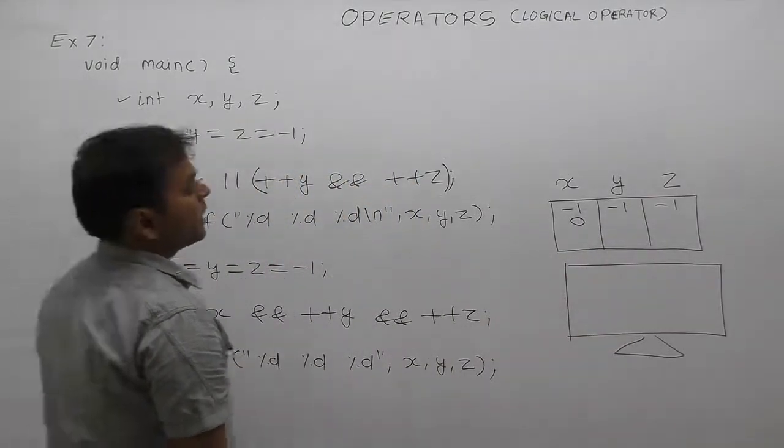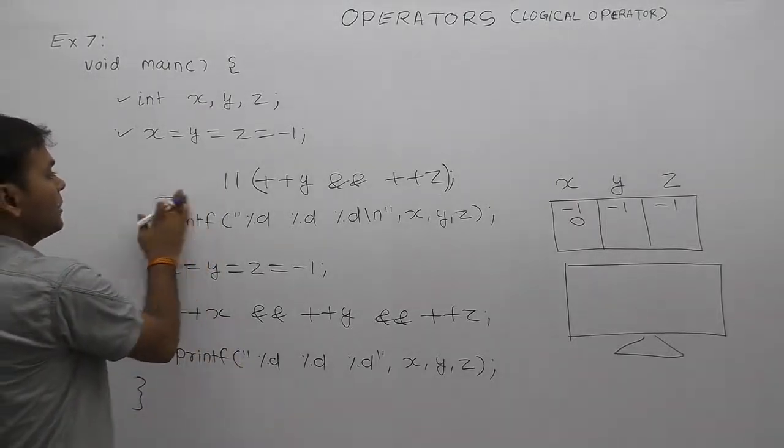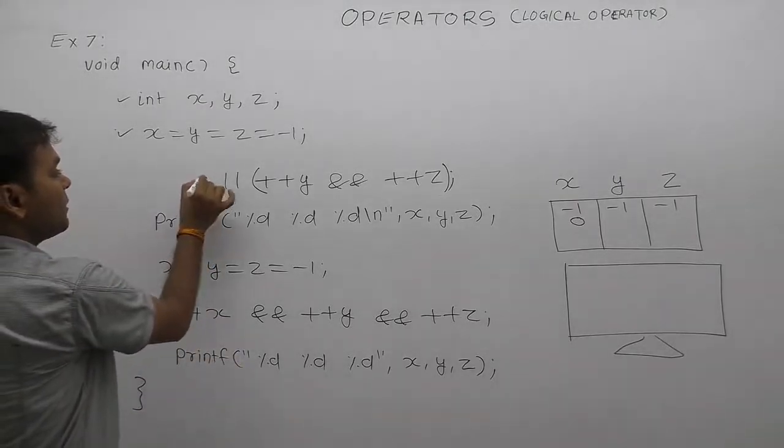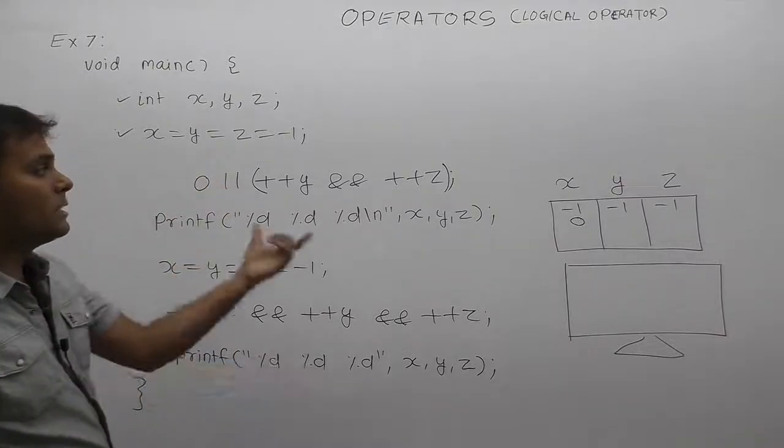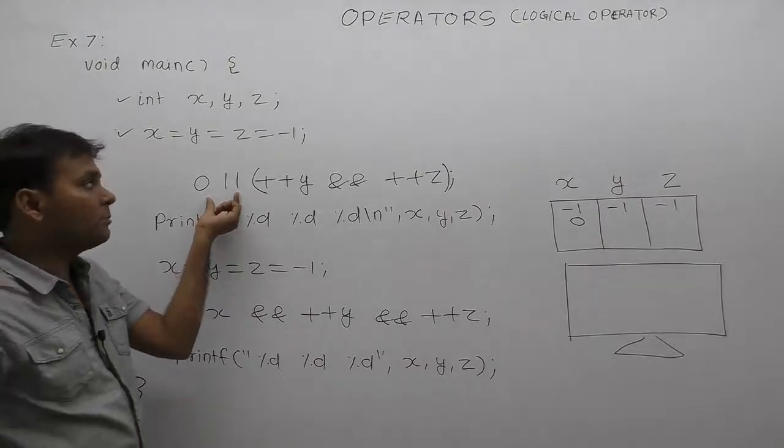X becomes 0. Minus one is replaced by 0. Then replacement. First increment, then replacement. Replace only current value of x, which is 0. Now with respect to OR, checking first condition. Is it false? Yes, false.